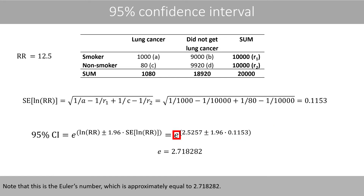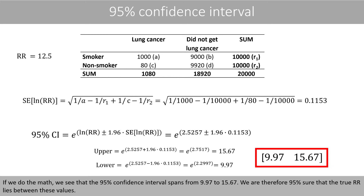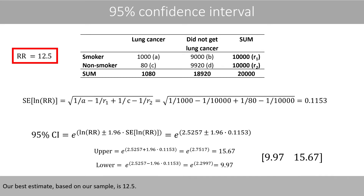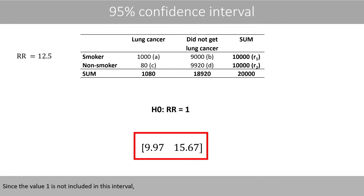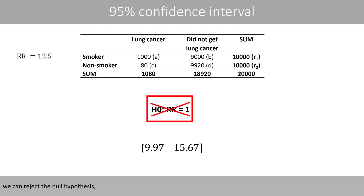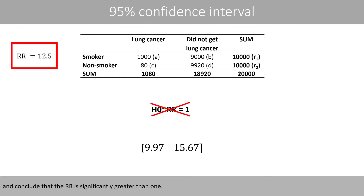Note that this is Euler's number, which is approximately equal to 2.718282. If we do the math, we see that the 95% confidence interval spans from 9.97 to 15.67. We are therefore 95% sure that the true relative risk value lies between these values. Our best estimate based on our sample is 12.5. Remember that the null hypothesis states that the relative risk is equal to 1. Since the value of 1 is not included in this interval, we can reject the null hypothesis and conclude that the relative risk is significantly larger than 1.